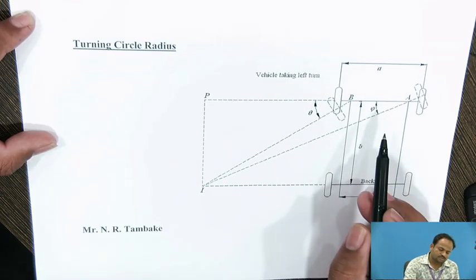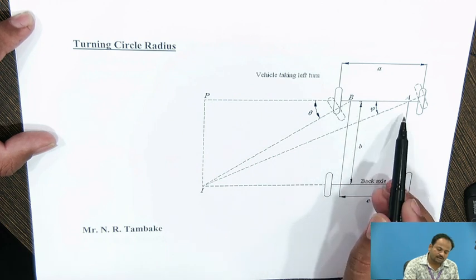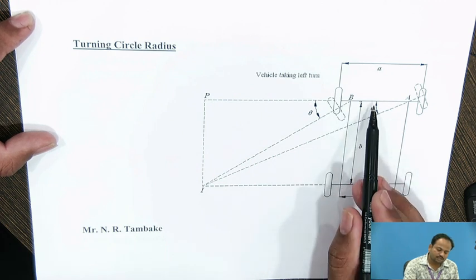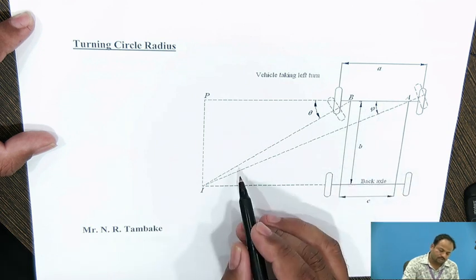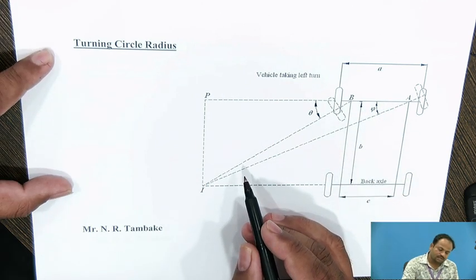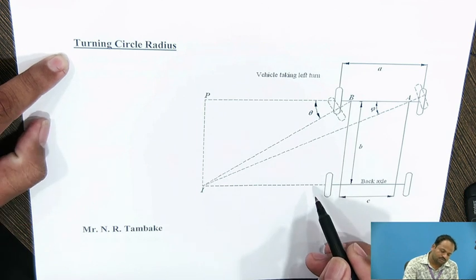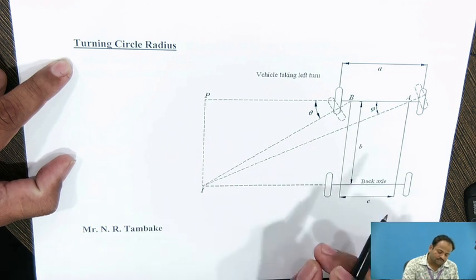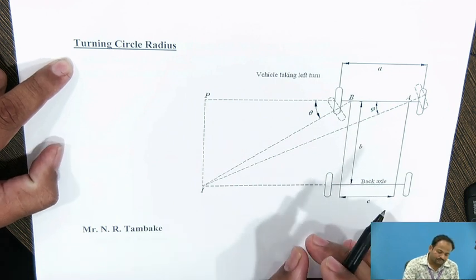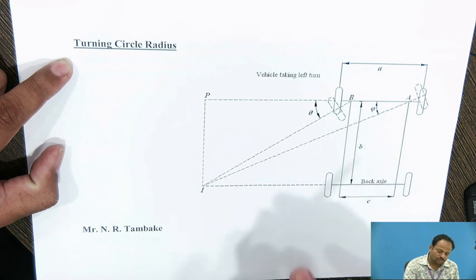The Ackerman Steering Gear Mechanism — in this, the entire steering gear mechanism is situated to the back of the front axle. In this particular session, we will first look towards the turning circle radius. When a vehicle is taking a turn, what is the turning circle radius of all the four wheels?